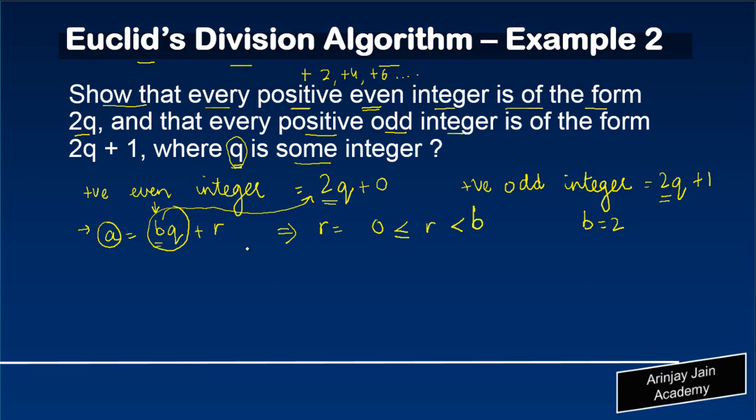Now, if b = 2, that means r can lie between 0 and 2, but r is also a positive integer. So what are the values which r can take? r can have a value which is either 0 or 1, because these are the two which satisfy this formula.